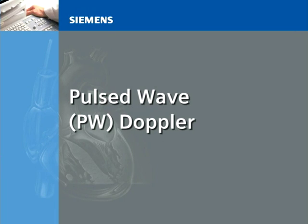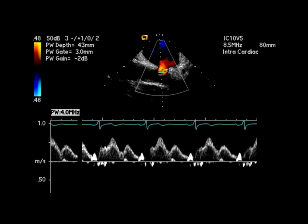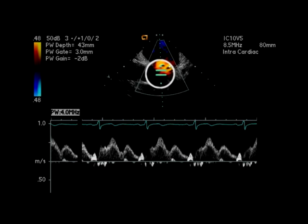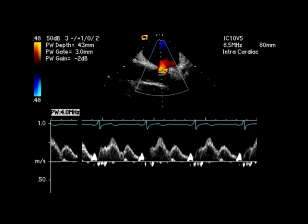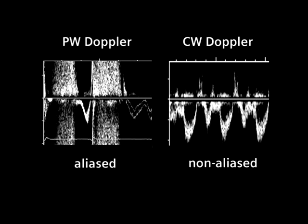Pulsed Wave (PW) Doppler. The PW Doppler signal shown here is being used to evaluate the blood flow within a pulmonary vein. PW Doppler measures the frequency shift in a small volume of cells contained within a sample gate, making it possible to selectively study the velocities within different cavities and valve areas. The maximum velocity that can be measured using PW Doppler is limited because of a phenomenon called frequency aliasing, which can be observed in various cardiac conditions that produce very high velocity blood flow.